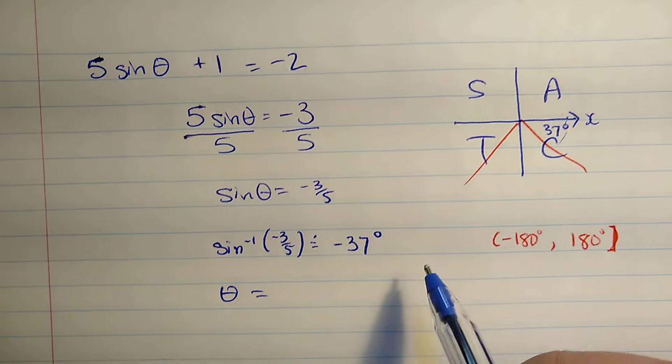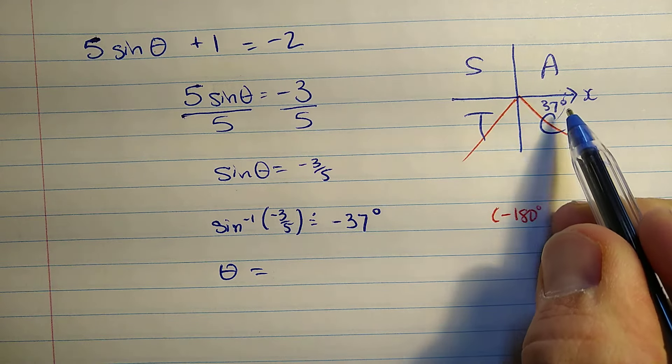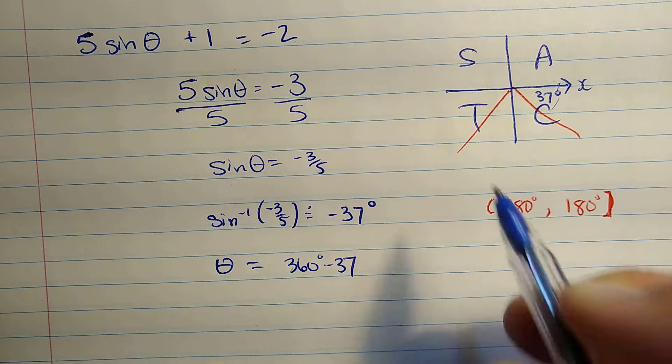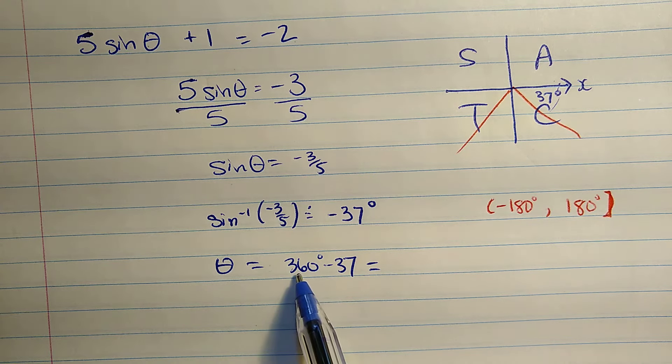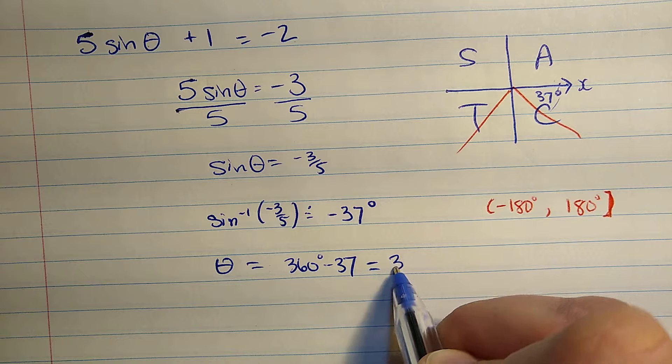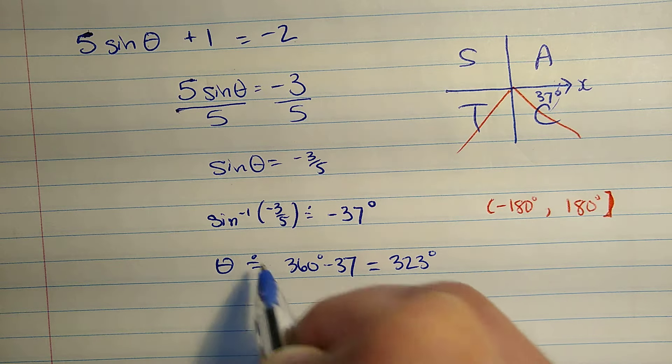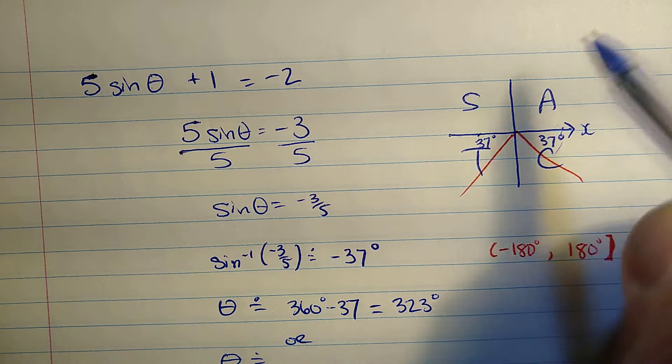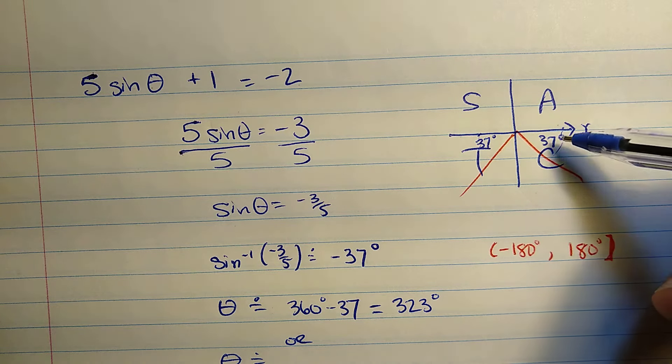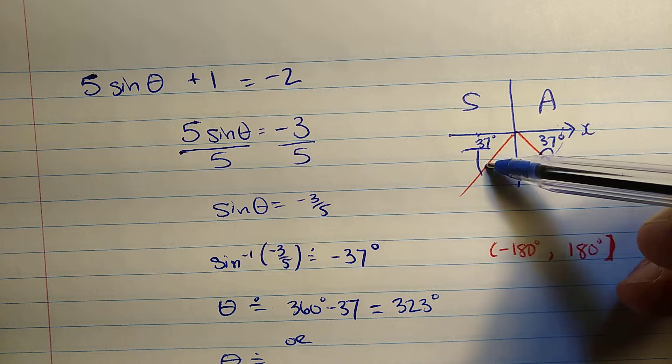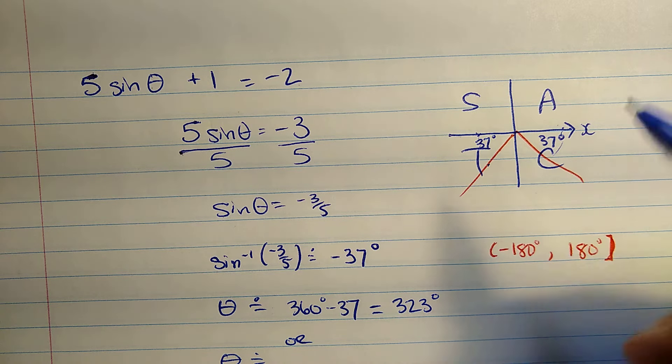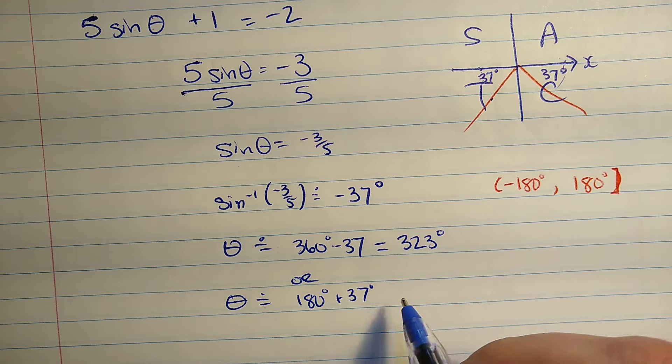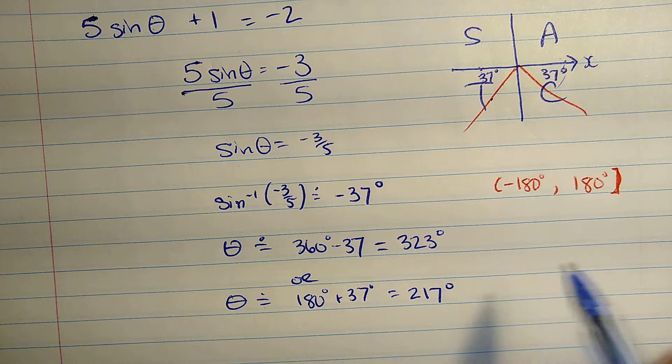So this gives us one of our solutions is 360 minus 37. Maybe I shouldn't have written this right here. But in any case, that would be 323. That's approximately. Or we have another solution. Theta could be 37 degrees away from the x-axis on this side. That's the related angle using the acute angle 37. So 180 plus 37 is 217.